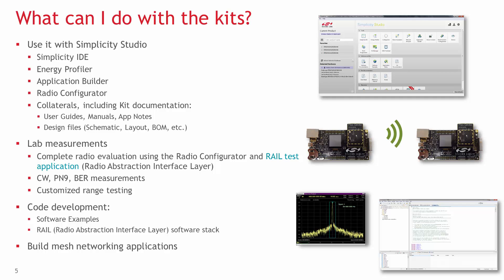For evaluation and lab measurements, the RAIL test application code is available. The RAIL, or Radio Abstraction Interface Layer, test application is a lab software that supports continuous wave, PN9, bit error rate, and packet error rate measurements. To perform range tests, the RAIL test application can be customized based on the desired RF parameters. The WSTK platform is also used to create and debug code, run the RAIL API, or build mesh networking applications.